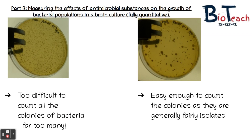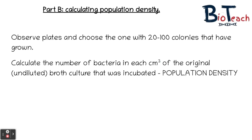Once you've incubated your plates and removed them around 72 hours after, you might have plates that look like these two examples taken from the AQA practical handbooks. The first one — the 1 in 100 dilution on the left — has brownish dots representing bacterial colonies, but there are far too many to count easily and lots are spread out. In comparison, the 1 in 1,000 dilution on the right has colonies that are easy to count — they're discrete and isolated from each other. On these plates you need to choose one that has around 20 to 100 colonies that have grown.